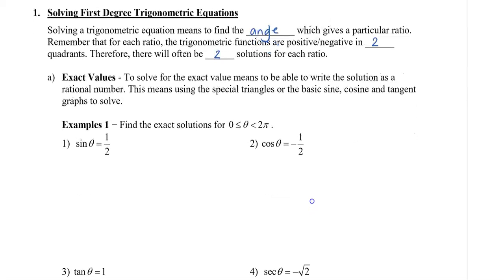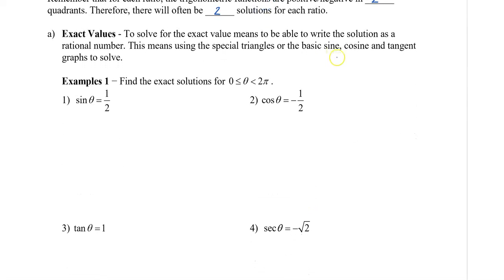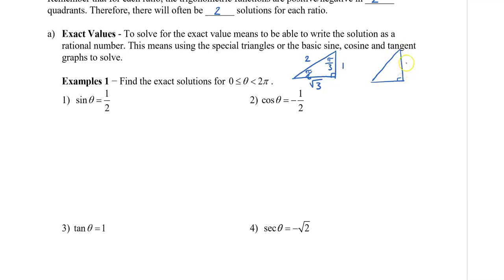To remind us what these triangles look like, I'm going to draw them. We have the 1, √3, and 2 triangle, with angles π/6 and π/3. I'm using radians because the solution domain is between 0 and 2π. My other triangle is the 1, 1, √2 triangle, with both angles at π/4.